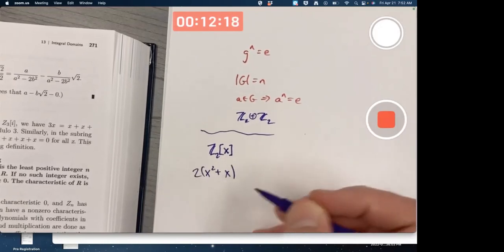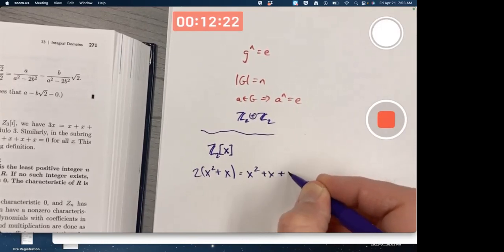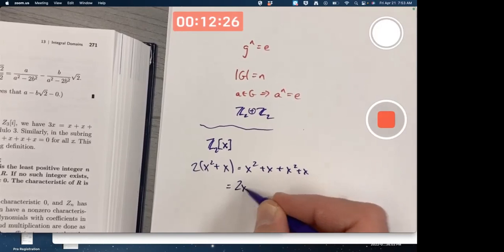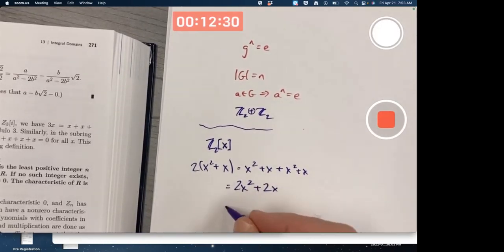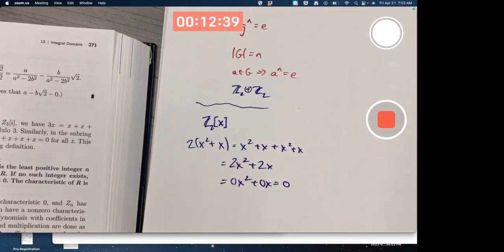It still has characteristic 2. You take any polynomial in there and add it to itself. So, quote unquote, multiply it by 2 means add it to itself. Combine like terms. And then at the end, you do need to mod the coefficients by 2. It's giving us the 0 polynomial, the additive identity. Obviously, that's going to work no matter what polynomial in there that we have. So this has got characteristic 2.